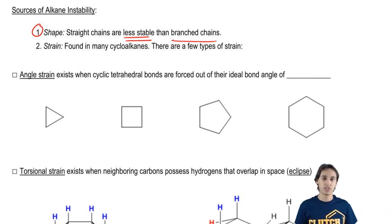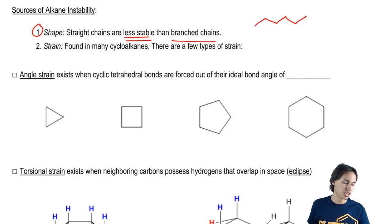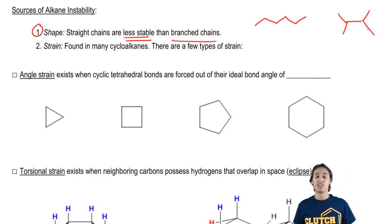So what I would say is instead of trying to understand it, just memorize it. That a straight chain, if I had a six carbon straight chain and if I had a six carbon branch chain, the actual – we're not talking about intermolecular forces.